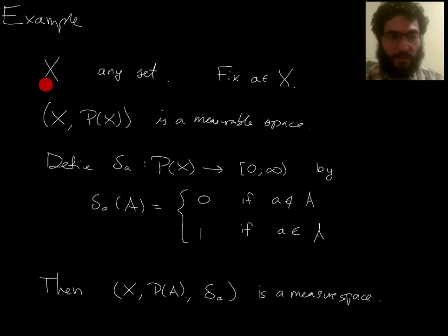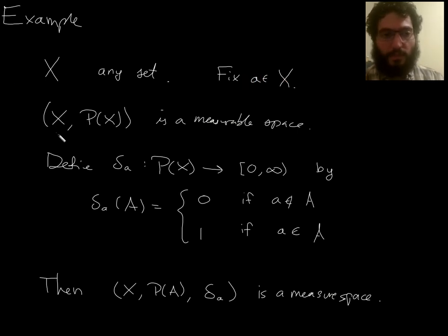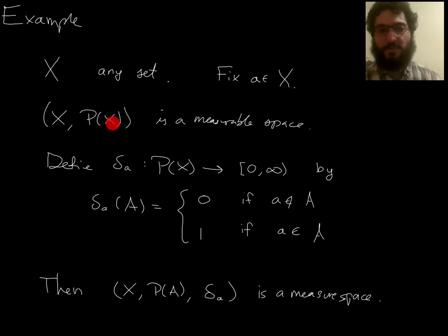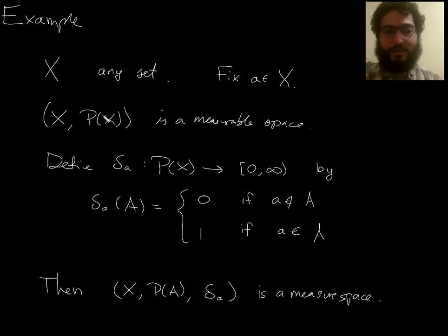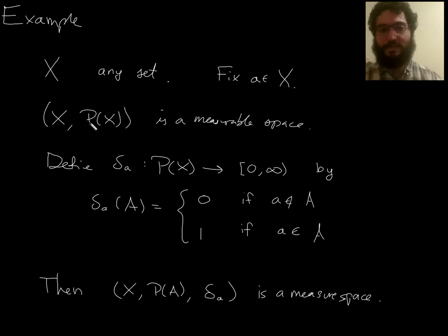For this first example, let X be any set and fix some point in X. If you just let X be any set, then the power set of X is going to be a sigma algebra on X — it's one of the two trivial sigma algebras. Given any set, you always have the power set, which consists of everything, so it's closed under countable union, intersection, whatever. There's another trivial one: the smallest sigma algebra, containing only the empty set and the full set. The power set is the biggest sigma algebra you can have.